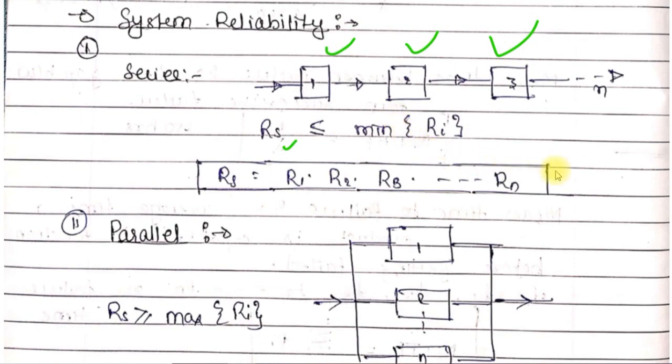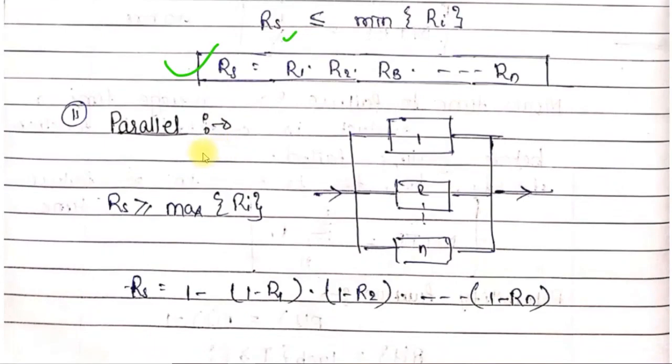Similarly, if components are in parallel, the parallel formula is 1 - (1-R1)×(1-R2)×...×(1-Rn). In this case, the system reliability is the maximum of Ri. In a parallel system, it will be the maximum or equal to the component with the highest reliability.